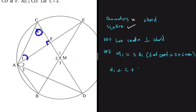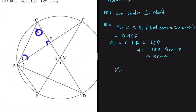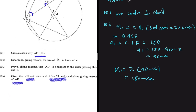In triangle ACF: A1 + C + F = 180 degrees (sum of angles in a triangle). So A1 = 180 minus 90 minus x, which gives A1 = 90 minus x. Therefore M1 = 2(90 minus x) = 180 minus 2x. That gives us the size of M1 in terms of x. Now moving to 10.3 — we're almost at the interesting 10.4.